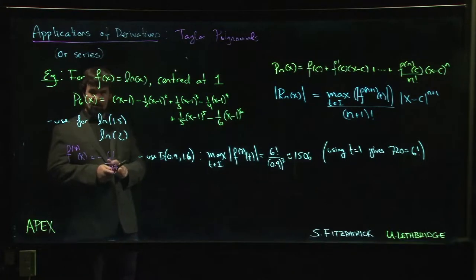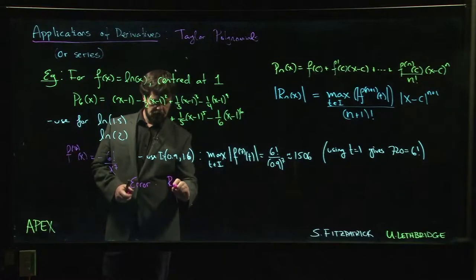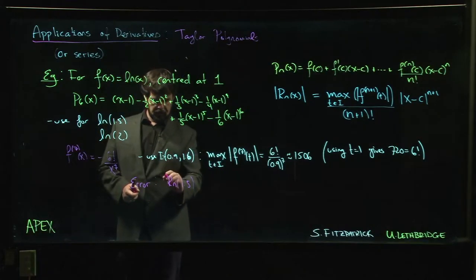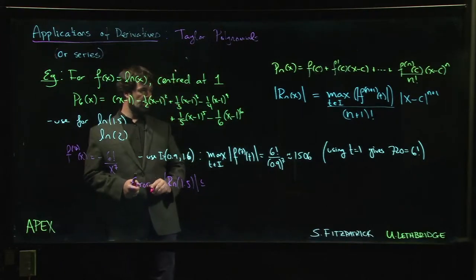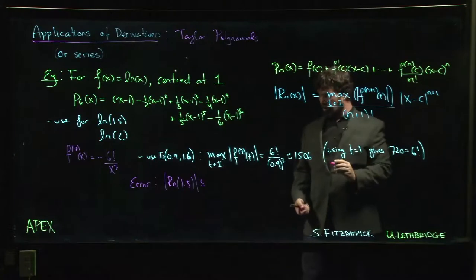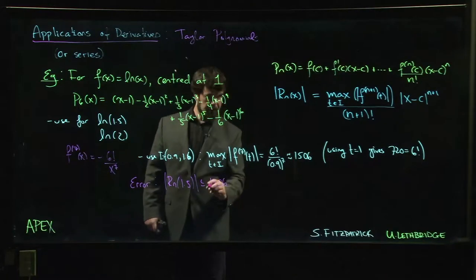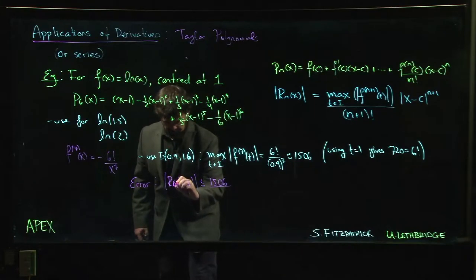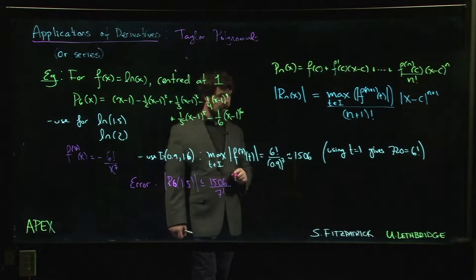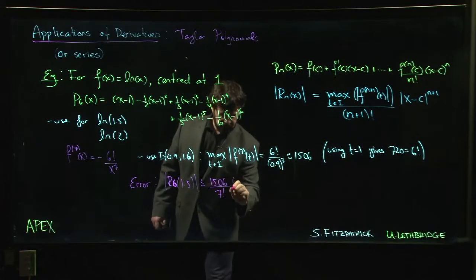Okay, so we have this maximum, and so now we know that if we're interested in the error, our error is going to be the remainder at 1.5. And we want the absolute value, so we take the absolute value. And that remainder is going to be less than or equal to, so we have this maximum here, and the best that we can get on the interval we've chosen is 1506. We divide by 7 factorial—this is R₆, so for n equal to 6 we divide by 7 factorial. And then x minus c: c is 1, x is 1.5, 1.5 minus 1 gives us 0.5 or one half, raised to the seventh power.